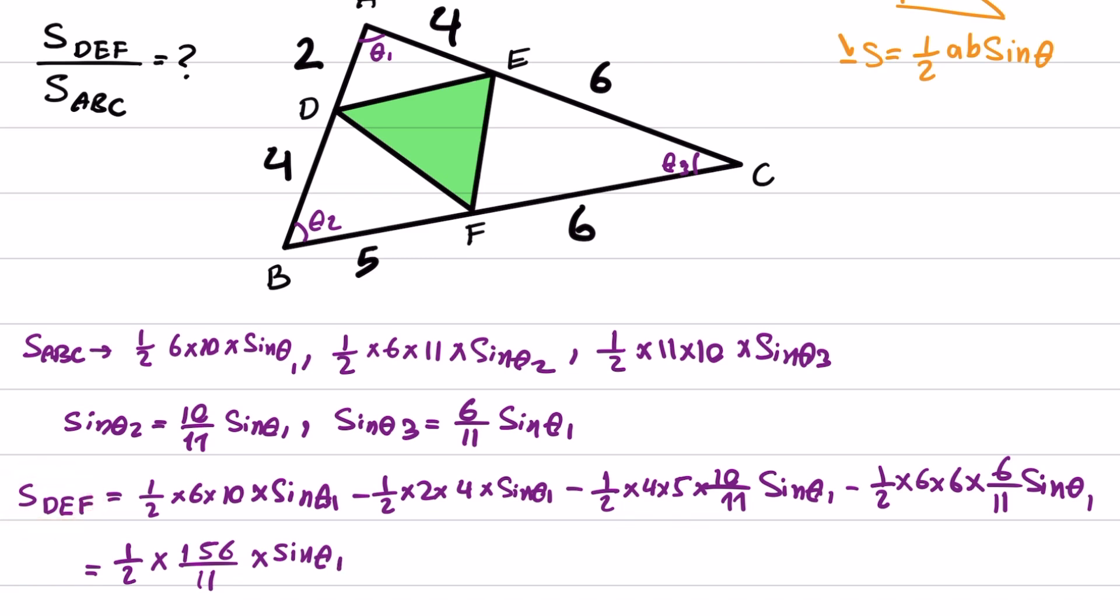Now that we have the area of S DEF, we can obtain the area of S DEF over S ABC. As we can simplify 1/2s, it will be 156/11 times sine theta 1 divided by this term. When we simplify 1/2s, it becomes 60 sine theta 1.